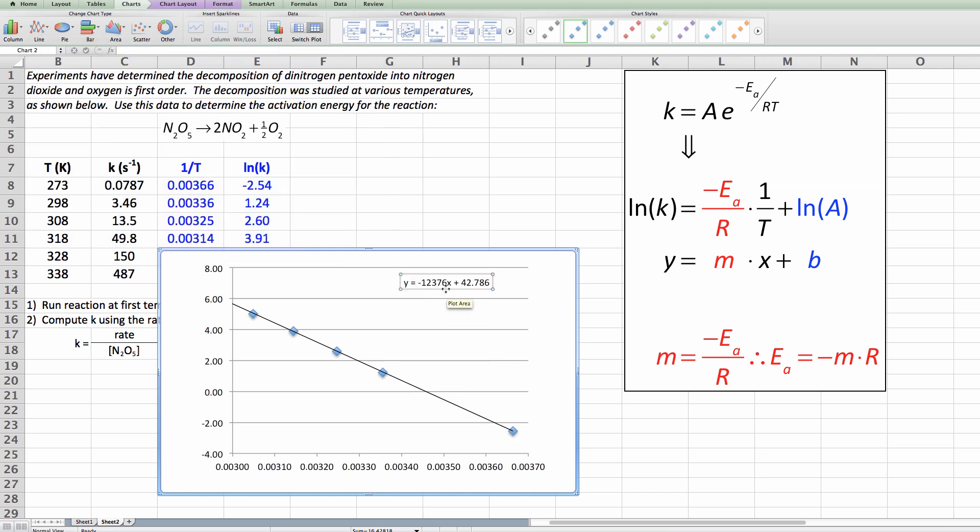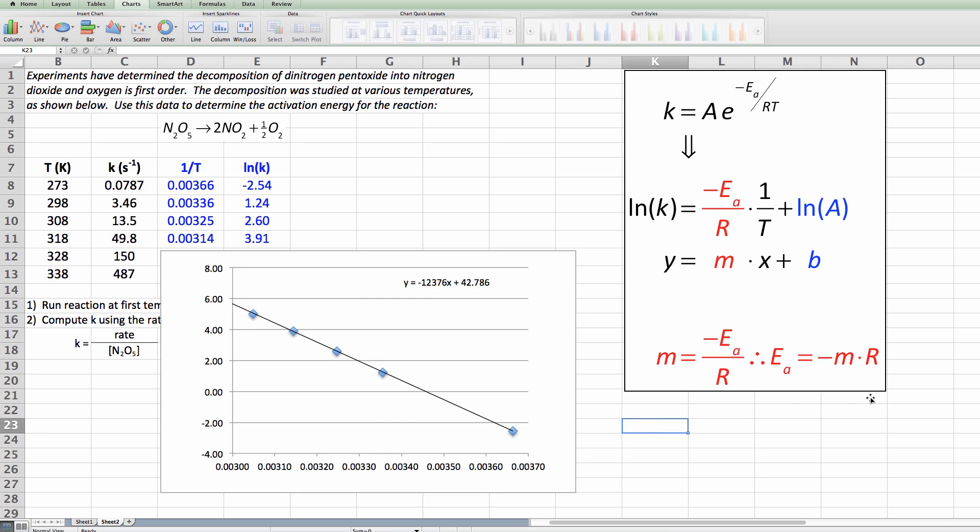So there's our equation for the line. The slope is 1,002 or 12,376. So that would mean if I want to use this calculation right here I need to take my, I have to calculate that I have to do negative 12,376.